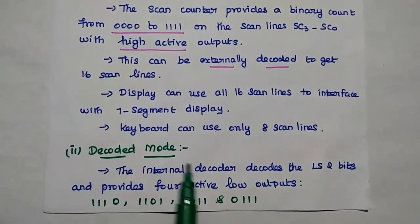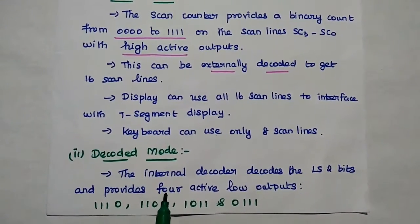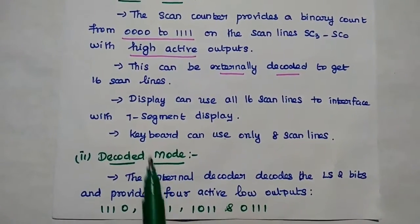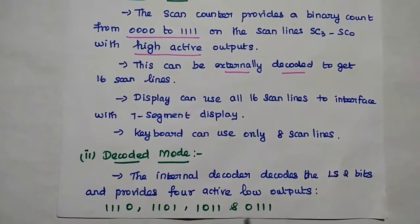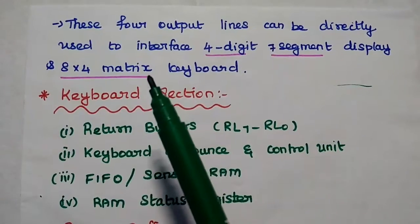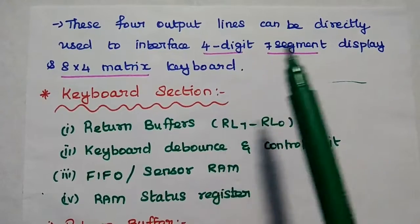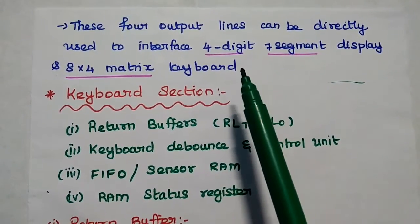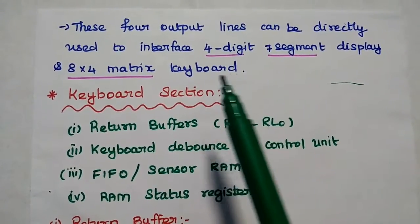In decoded mode, the internal decoder is used to decode the least significant 2 bits of the scan lines and provides 4 active low outputs. These 4 output lines can be directly used to interface with a 4-digit 7-segment display and an 8x4 matrix keyboard. Decoded mode is mainly used to interface with a 4-digit 7-segment display. The difference is: in encoded mode an external decoder is used, while in decoded mode an internal decoder is used.